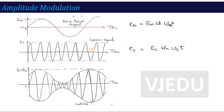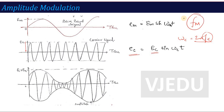Similarly, the carrier signal is also a sinusoidal wave. The carrier instantaneous value is defined as: ec = Ec sin(ωc·t), where Ec is the maximum amplitude of the carrier, and ωc = 2π·fc, where fc is the carrier signal frequency, simply called the carrier frequency.